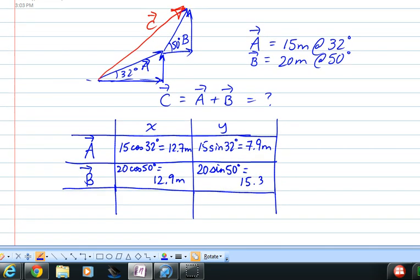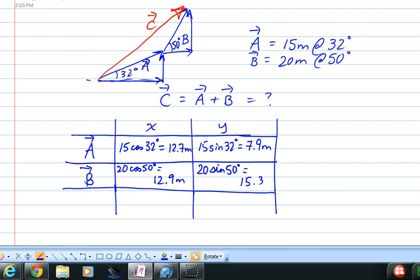So we've broken our vectors into components. And then we simply add up all the x and y components. So in the x direction we're talking about 25.6, and that's a positive number. And in the y direction we're talking about 23.2 meters, also in the positive direction.